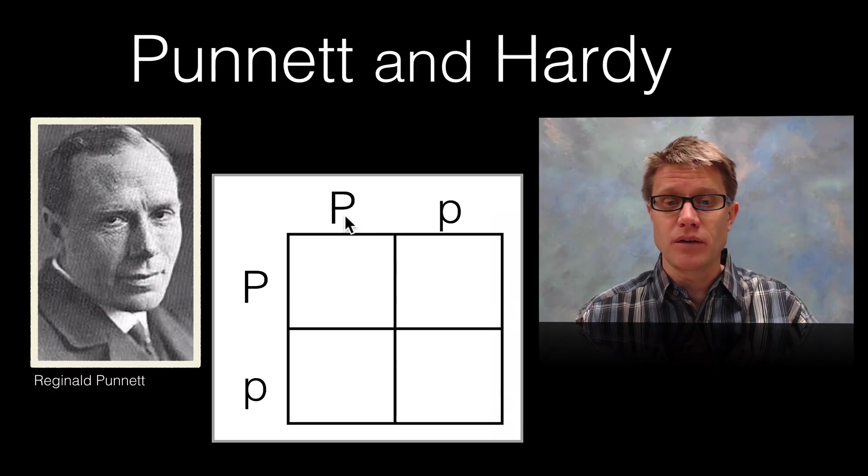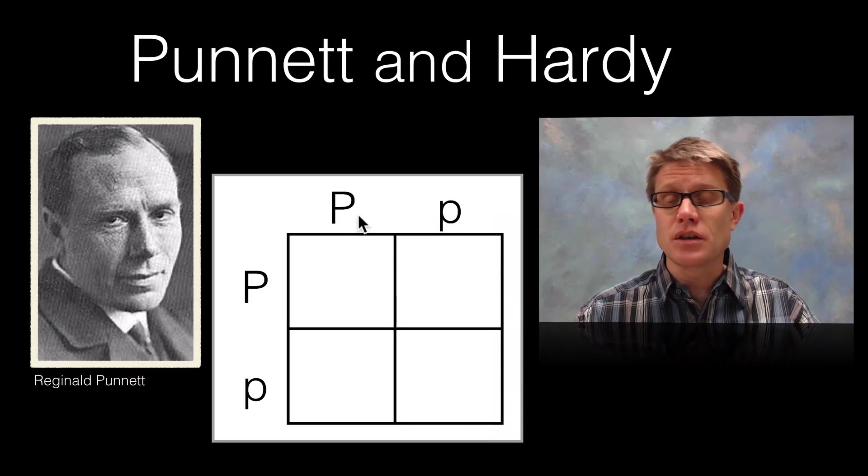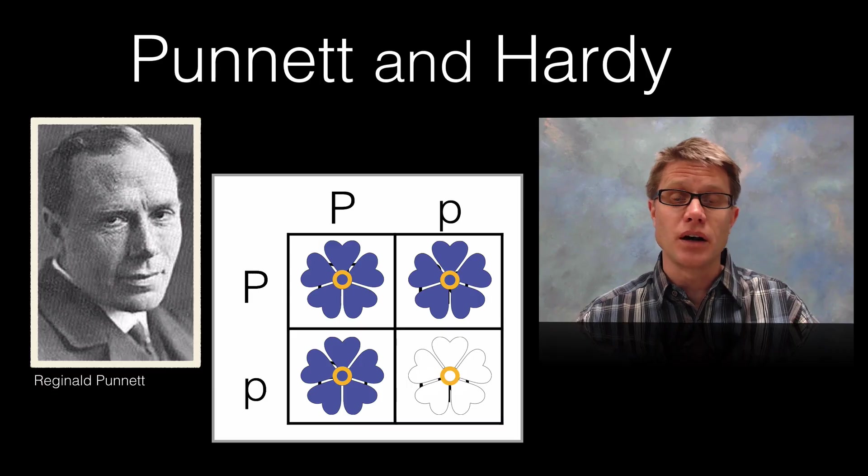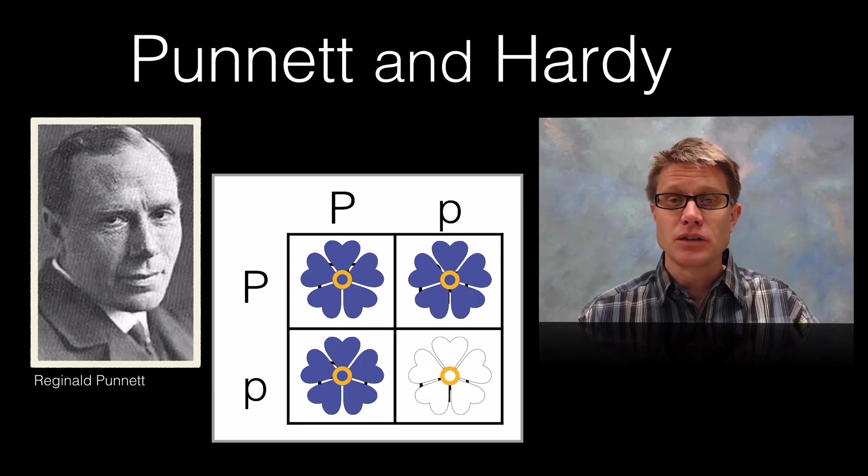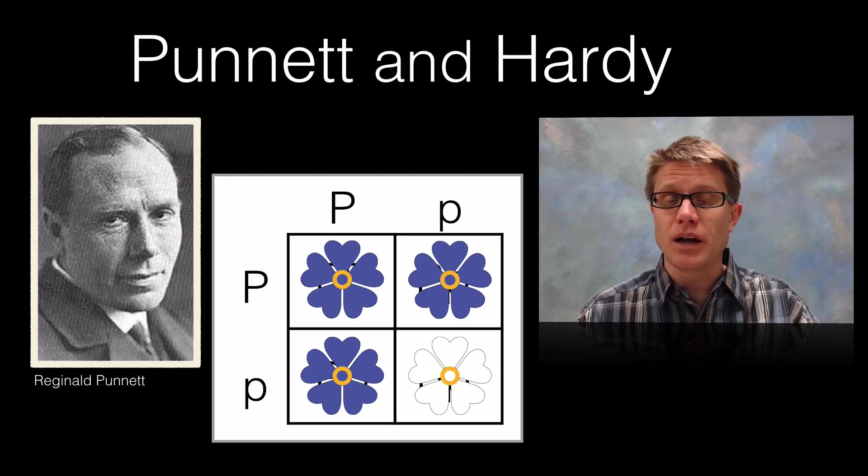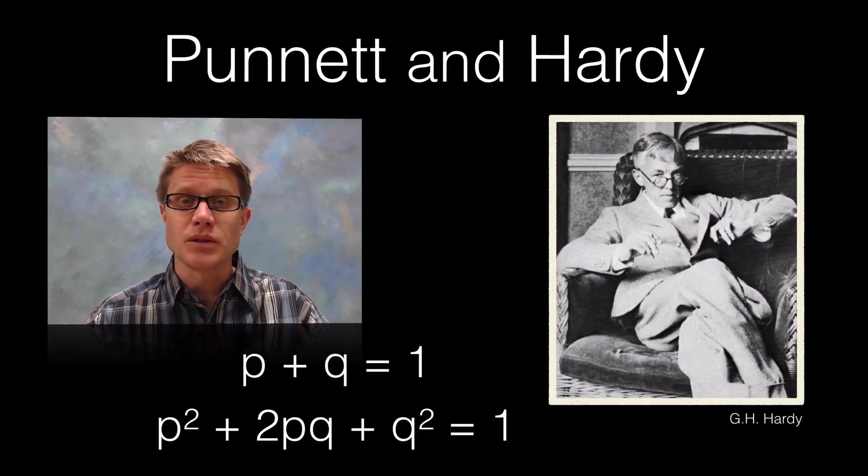So imagine we have this cross right here. We have a heterozygous purple flower crossed with another heterozygous purple flower. So what do these two letters represent? The two genes that that flower could give off. And so we could figure out all the possibilities that we could get. And so since purple is dominant we're going to get a 3 to 1 of purple to white flowers. And so most students like doing Punnett squares.